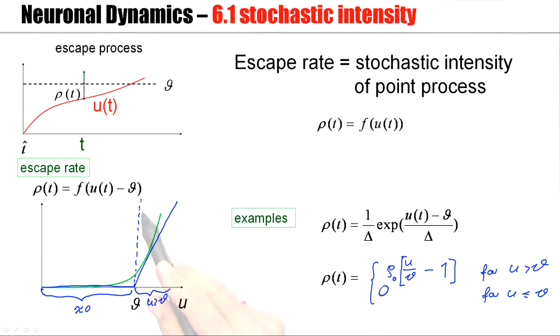This very big escape rate essentially means that as soon as the membrane potential crosses the threshold, a spike is initiated. The rapid increase corresponds to a rapid response as soon as the membrane potential crosses threshold.